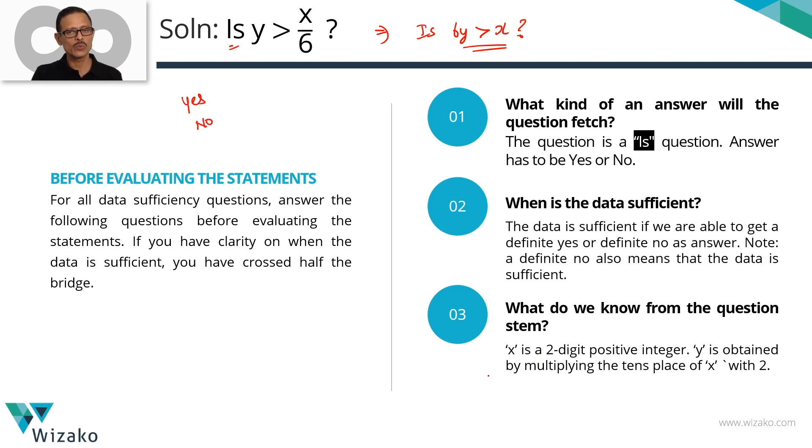What information do we have about X and Y from the question stem? X is a two-digit positive integer. Y is obtained by multiplying the tens place of X with 2. For example, if X is equal to 52, then Y will be equal to 2 times the tens place of X which is 5. So Y will be equal to 10 in that case. So that's what X and Y are. We'll have to determine whether 6Y is greater than X.